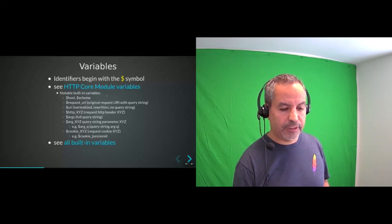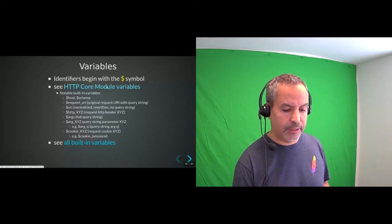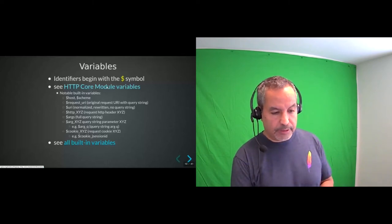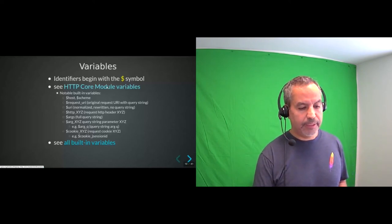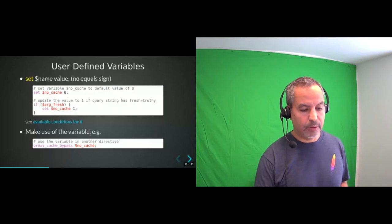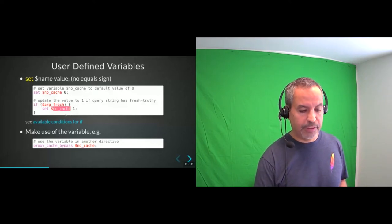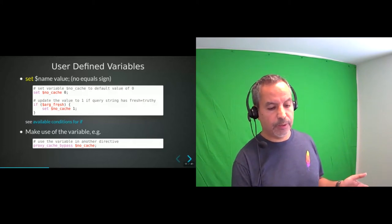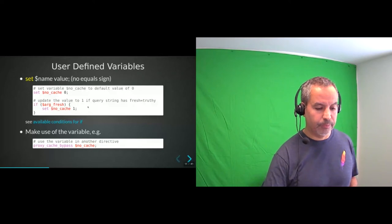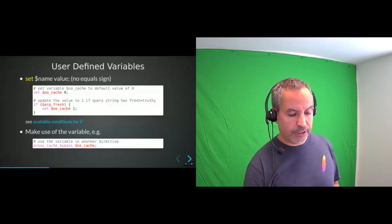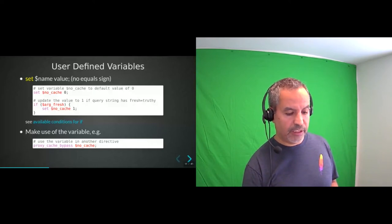Some modules define their own variables — for example the http core module defines a set of variables available across the configuration. User-defined variables use the format `set $variable_name value` — no equal sign. For example, I can set `$no_cache` to zero, then under certain conditions update it to one. If a query string parameter named `fresh` was passed and it's not empty and not zero, it evaluates to true and we update the variable to one. We can then use that variable — for example, to bypass the cache if it's truthy.